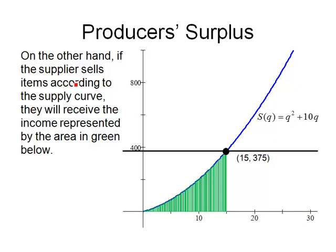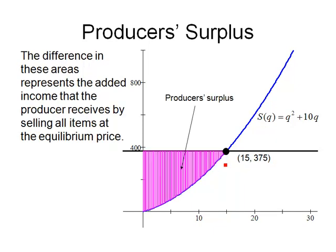If the supplier sells items according to the supply curve—in other words, following the blue curve—the area under that curve represents the income they would receive. The difference between those areas is the producer's surplus.